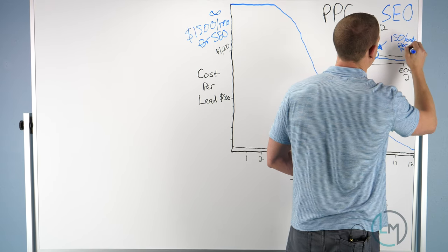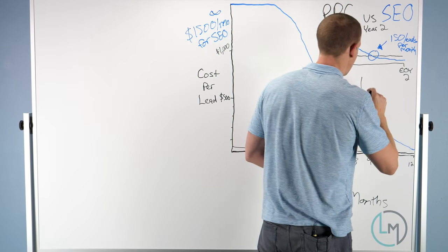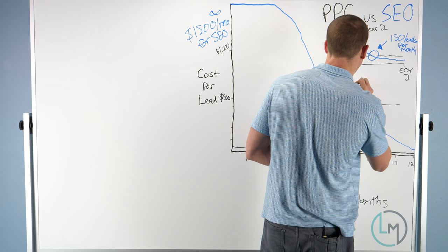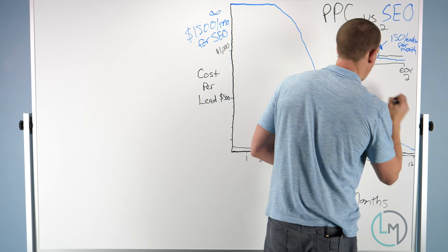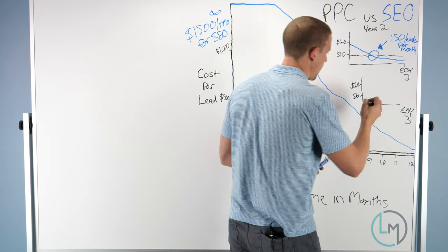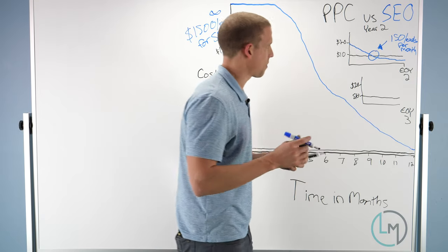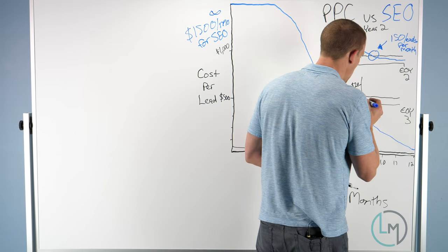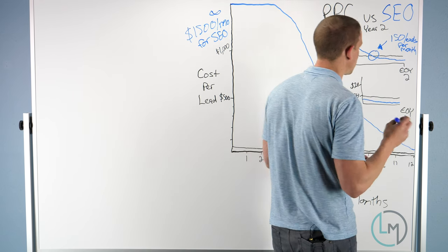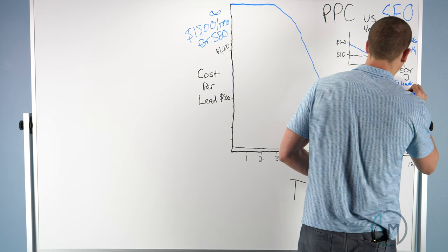If we did year three here, this line would still be around $8, $9, $10 a lead with pay-per-click. But now our cost per lead with SEO is even less—we might be at, let's say, 225 leads per month.